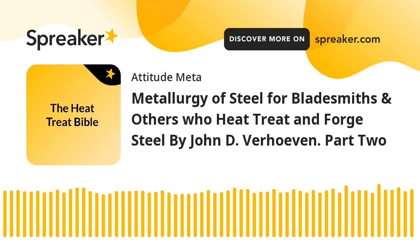Eutectoid steel — pearlite. In the previous two sections we considered steels having compositions on either side of the eutectoid composition of 0.77 wt% C. It turns out that steels having the composition of 0.77% C — a 1077 steel — generate a unique microstructure called pearlite. Fig. 3.7 presents the Fe-C phase diagram on which the area below the A1 line of 727°C (1340°F) is shaded dark. This entire area is a two-phase region; any steel cooled slowly into this area must consist of a mixture of ferrite and cementite (alpha plus CM). The microstructures of steels in this two-phase region vary widely, and pearlite is just one of many microstructures that can occur.